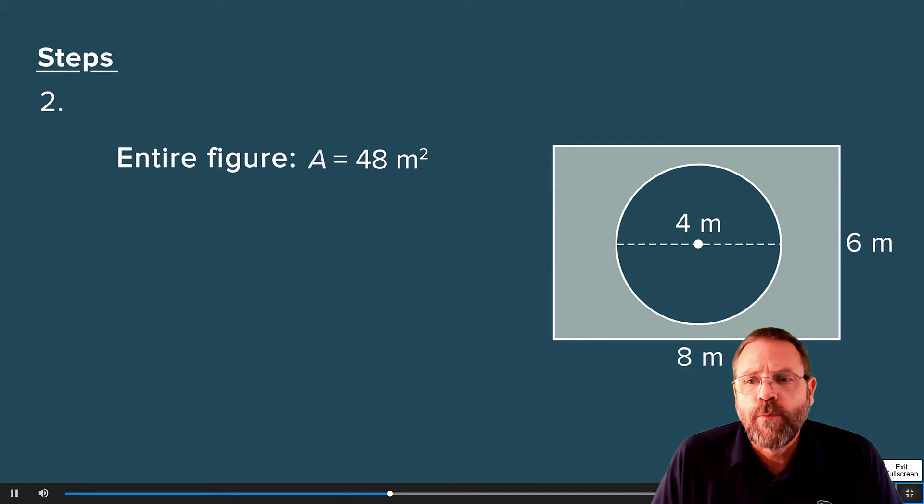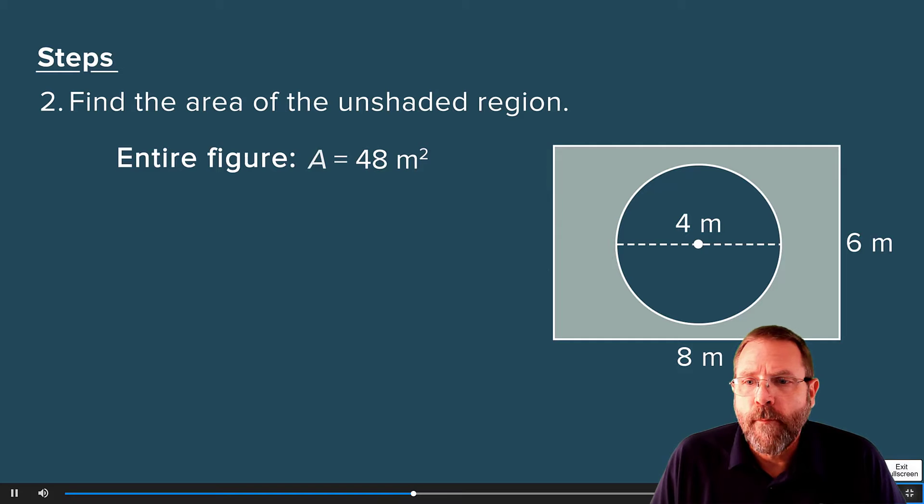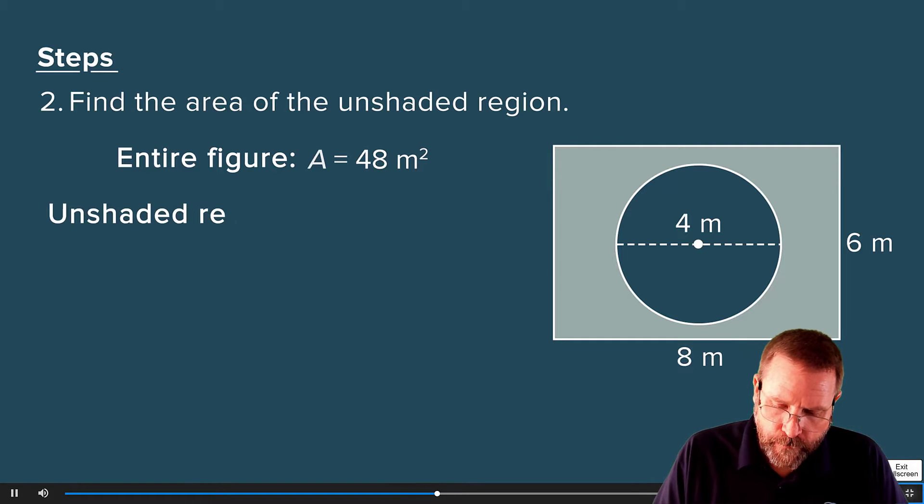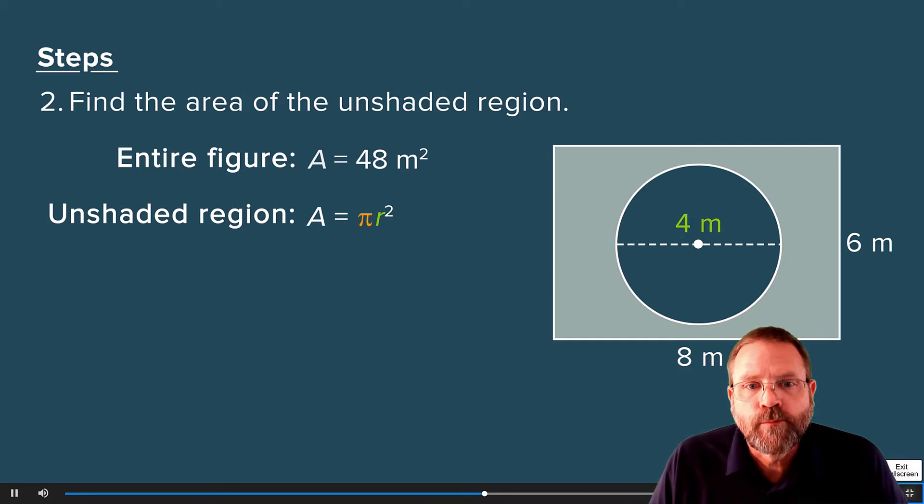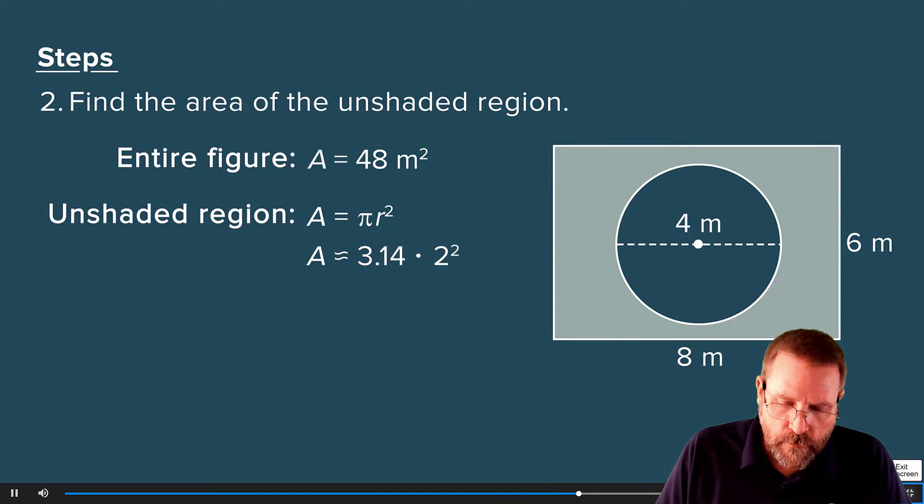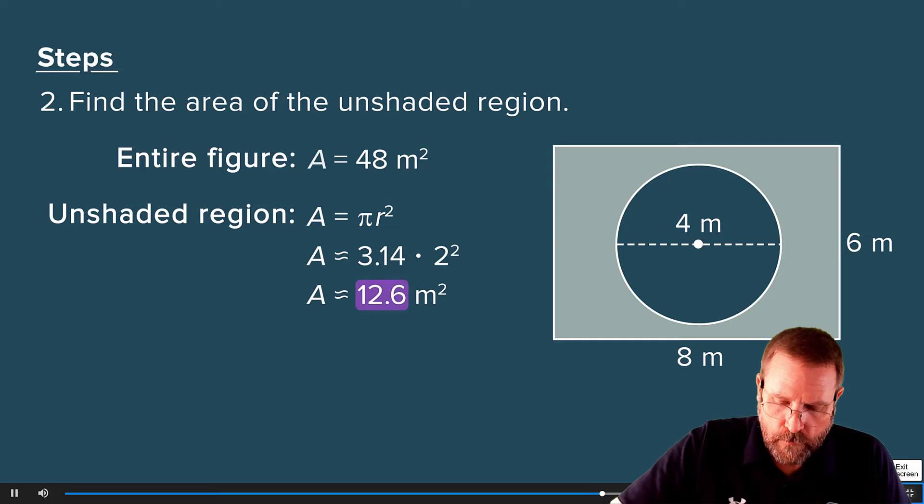Next, find the area of the unshaded region. The unshaded region is a circle with a radius of 4 divided by 2, or 2 meters. Multiply pi by the square of the radius to find the area. The area of the circle is approximately 12.6 square meters.